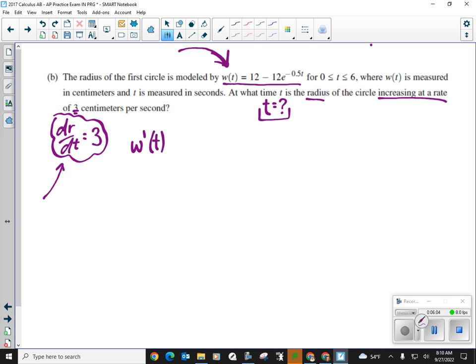w prime of t. Because when I take the derivative, that will start to bring in my rates. So the derivative of a constant is 0. So this will be negative 12 will be the constant. The derivative of e to anything, you always start by rewriting that times the derivative of just the exponent. The derivative of the exponent is this negative 0.5. Now, what can I combine? Well, negative times the negative is positive, and half of 12 is 6. So this right here is what I got as the rate of change.